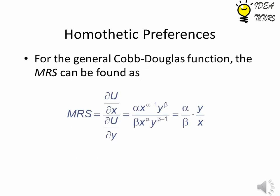For the general Cobb-Douglas function, the MRS is (α/β) × (y/x).